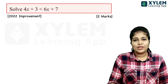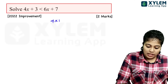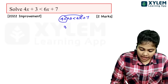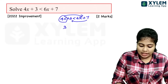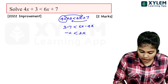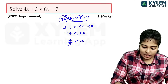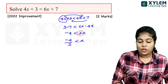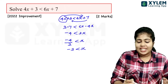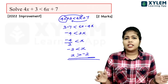Let's look at a practice problem: 4x plus 3 is less than 6x plus 7. If we rearrange, 3 minus 7 is less than 6x minus 4x. That is, minus 4 is less than 2x. Dividing both sides by 2, we get minus 2 is less than x. So x is greater than minus 2.